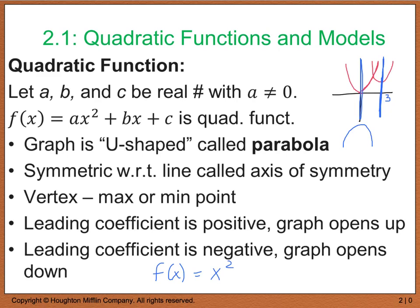If you have a calculator handy, compare the graphs of f of x equals x squared and g of x equals one-third x squared. If you're given g of x and want to know how it differs from the original, the first thing you should do is graph the parent function and compare. In this case, the one-third is going to affect the width and make the parabola broader than the x squared function. You can test that out on your own calculator.